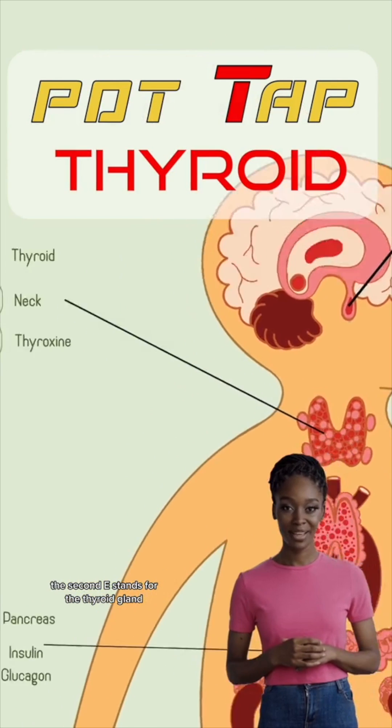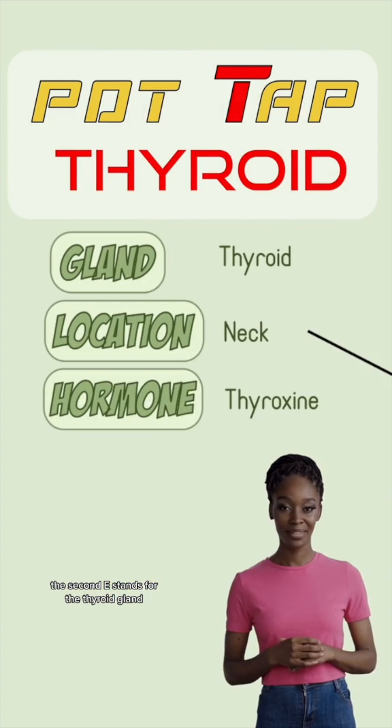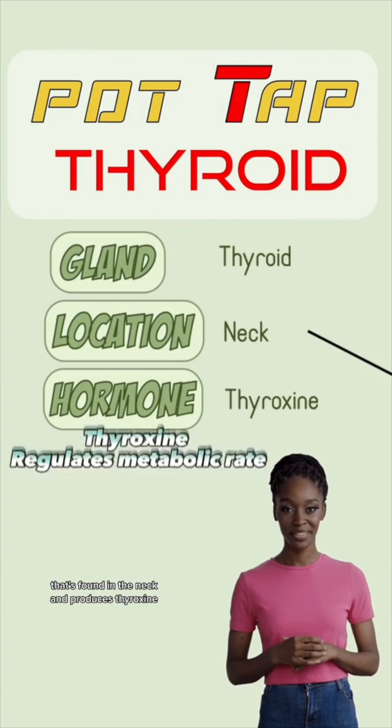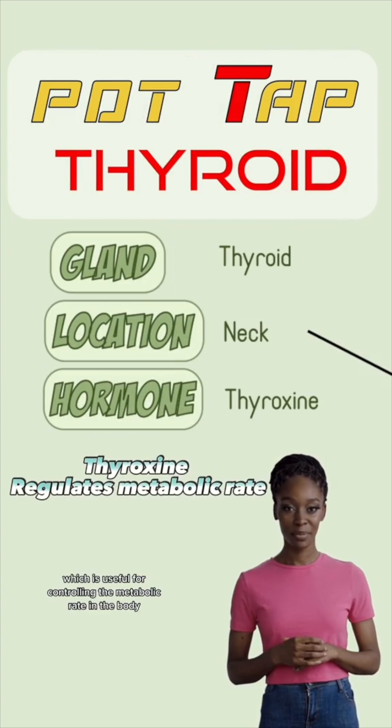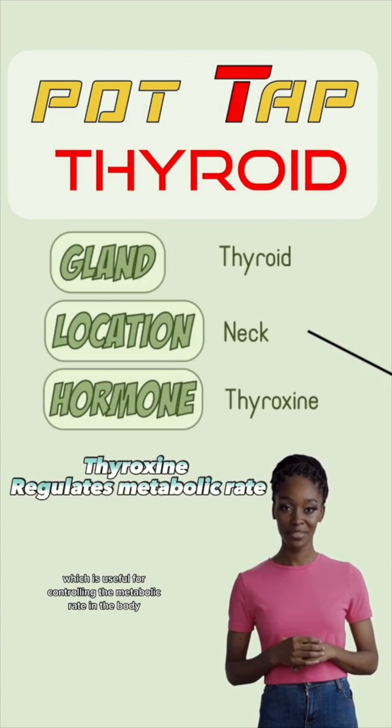The second T stands for the thyroid gland, found in the neck, and produces thyroxine, which is useful for controlling the metabolic rate in the body.